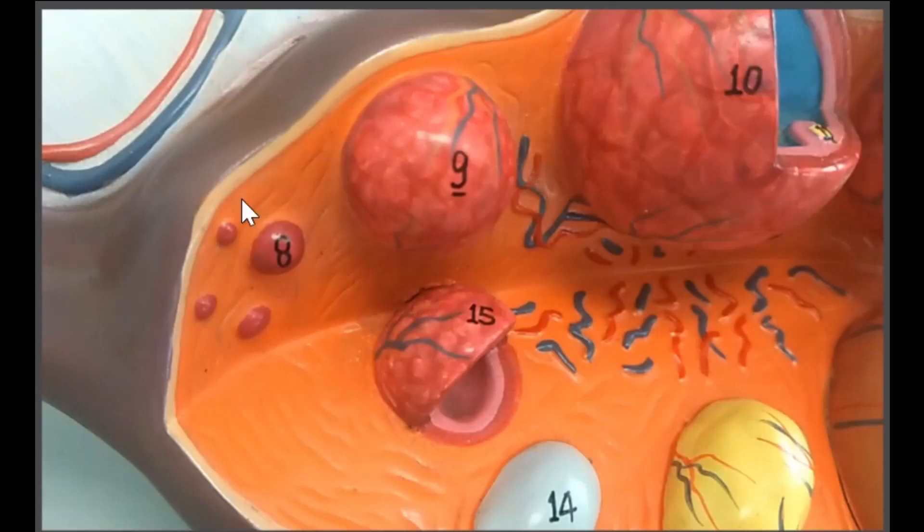This is a model of the ovary that is available in the lab. If you look carefully at number 8, this is a primary follicle. Inside a primary follicle, you can find a primary oocyte.